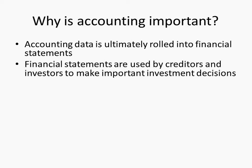Investors and creditors — the external users of your financial statements — are going to make decisions based on those statements. Investors might invest in stock, and creditors, like a bank, decide whether to lend you money. If they see a lot of debt and not many assets, they won't lend you money, or if they do, they won't give you a favorable interest rate. They look at ratios.